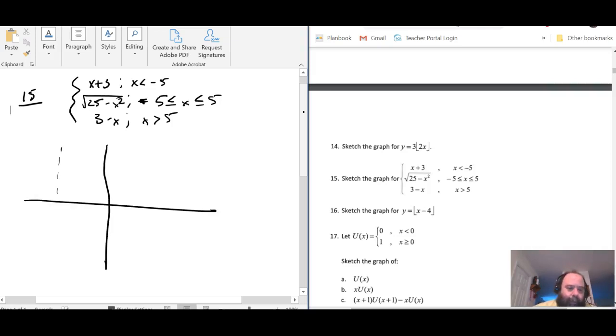I'm gonna build a graph. Our lines happen at negative 5 and 5 where the weirdness happens. This is just linear—y-intercept of 3, slope of 1—which means this is gonna cross here at negative 3 and then keep going.